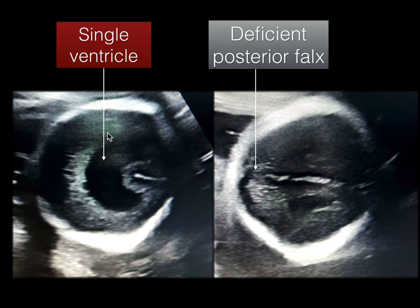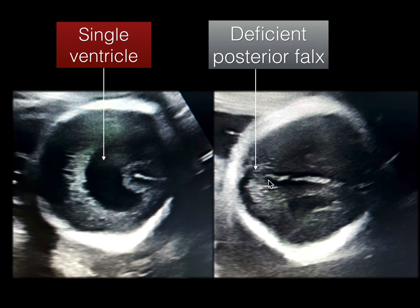A similar section lower down also shows the single ventricle and deficient posterior falx. You can see the falx is also irregular — it is not smooth and straight, and there is a deficiency of the posterior falx.